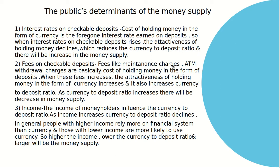Second point is fees on checkable deposits. Fees like maintenance charges and ATM withdrawal charges are basically the cost of holding money in the form of deposits. When these fees increase, the attractiveness of holding money in currency increases, which increases the currency-to-deposit ratio, and there will be a decrease in money supply. Third point is income. As income increases, currency-to-deposit ratio declines — people with higher income rely more on the financial system using credit cards and debit cards, while those with lower income are more likely to use cash. So higher income means lower currency-to-deposit ratio and larger money supply.